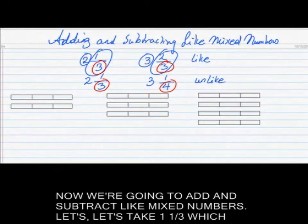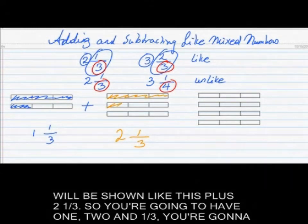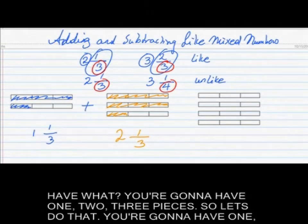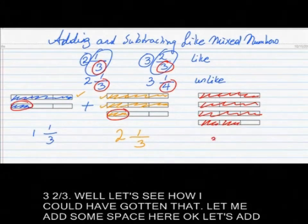Now we're going to add and subtract like mixed numbers. Let's take one and one-third plus two and one-third. Visually, you have one and one-third shown, then two and one-third shown. Combining them, you get three whole pieces and two of the third pieces. So the answer is three and two-thirds.